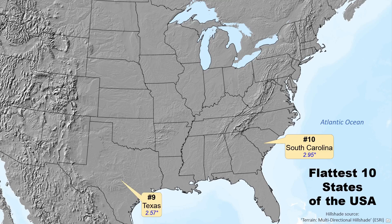Number 9: Texas. Some mountains in the far west, but mostly a big flat mix of coastal plain, great plains, and some central lowlands. Next, we have a run of fully inland great plains and central lowland states.